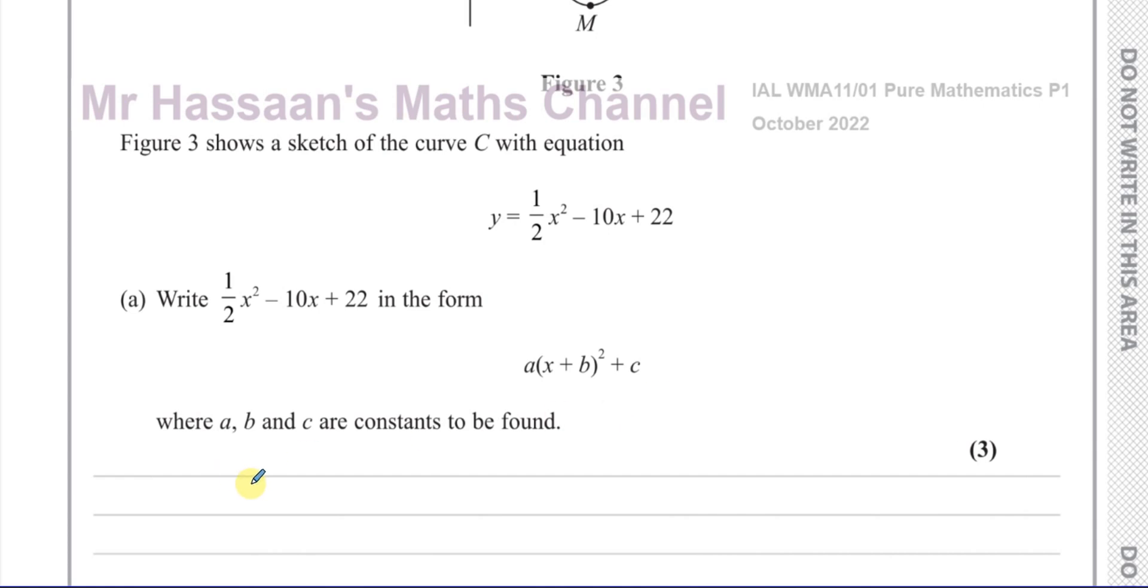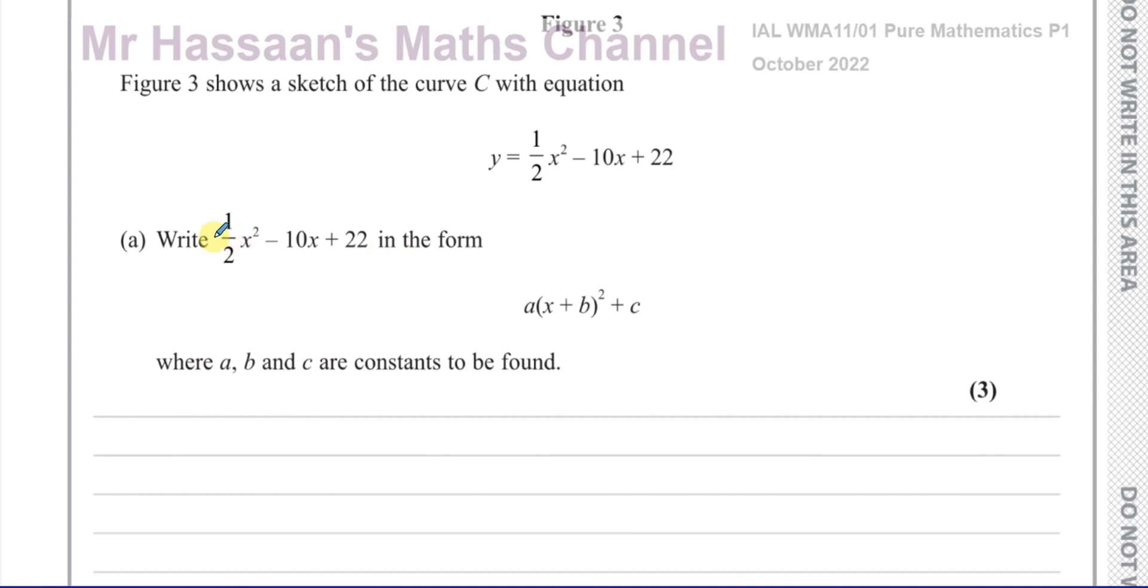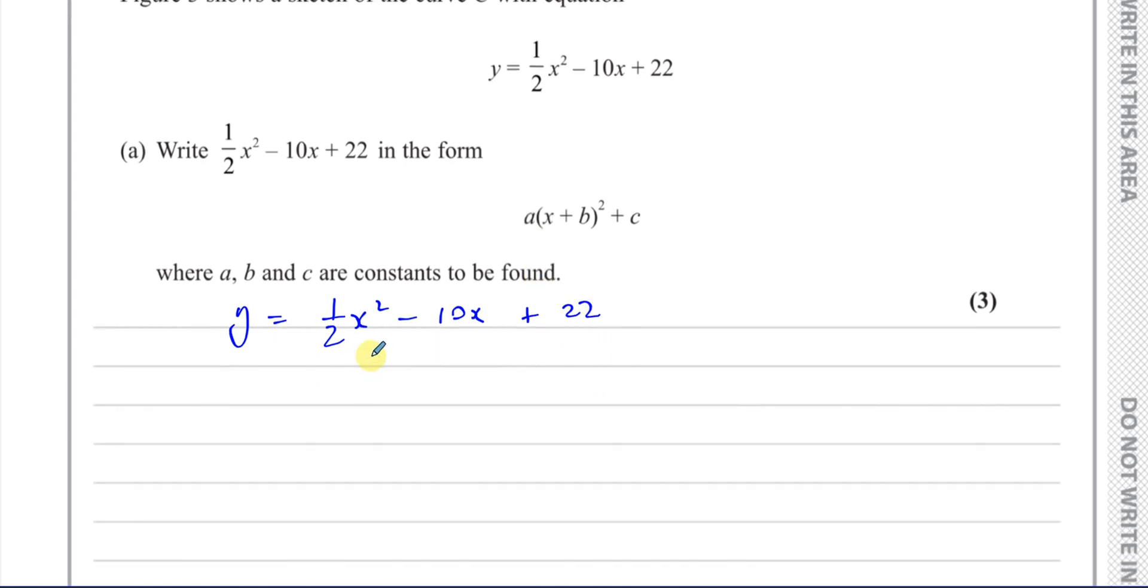Now first of all, when we want to complete the square, what we want to do is we want to write the x squared term with a coefficient of 1. Alright, so we start off with y equals 1 half x squared minus 10x plus 22. Now the way I like to do it, and people do it in different ways, is I like to concentrate on these two terms first. I don't worry about the term at the end, I'll deal with that at the end. So what I need to do is, I want to say 1x squared, not a half x squared.